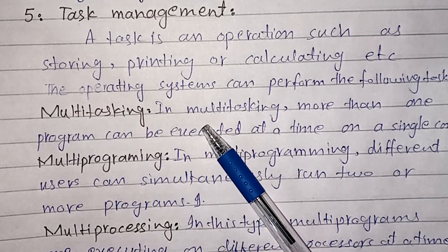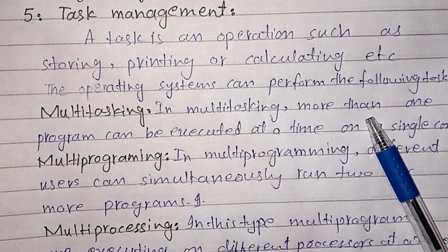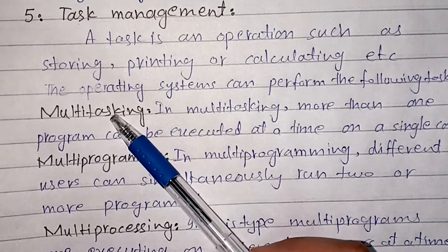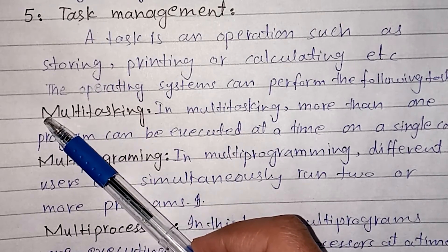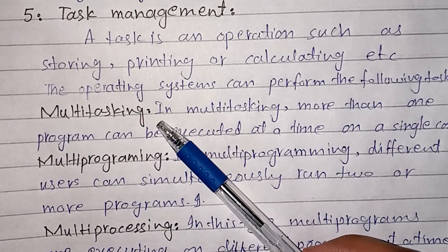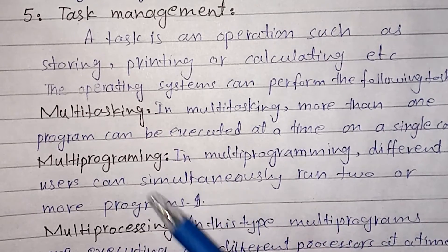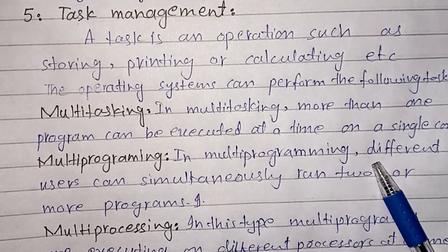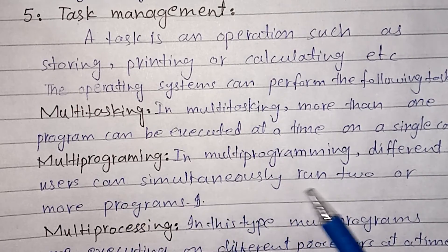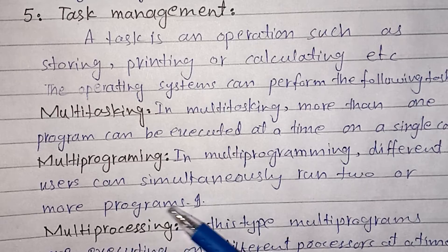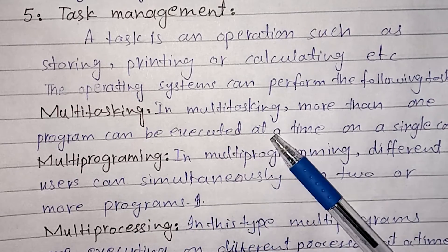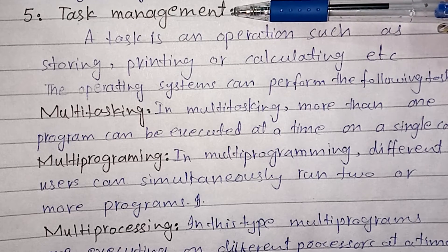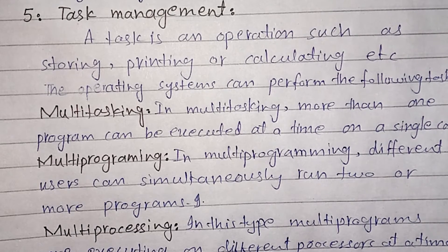In multitasking, more than one program can be executed at the same time, and it is used in Windows operating system. In multiprogramming, different users can simultaneously run two or more programs. These are techniques of task management for managing tasks.